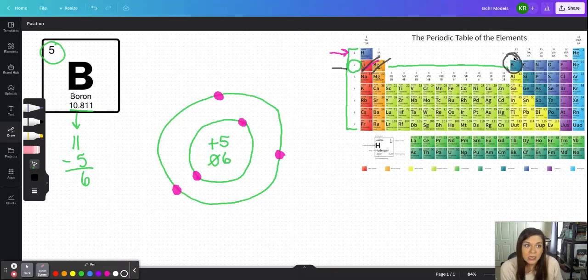Additionally, boron is a member of group 13, and all members of group 13 have three valence electrons because it's a little bit weird once we get to this section because of the transition metals, but they all have three valence electrons. So that's another way that you could determine that boron has those three electrons in its valence shell.